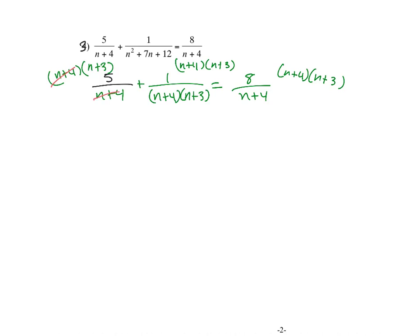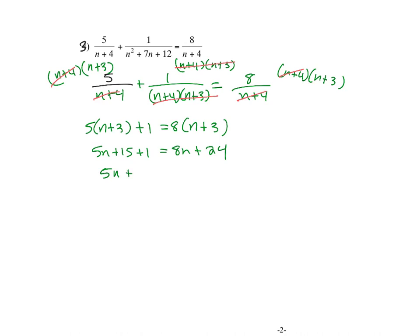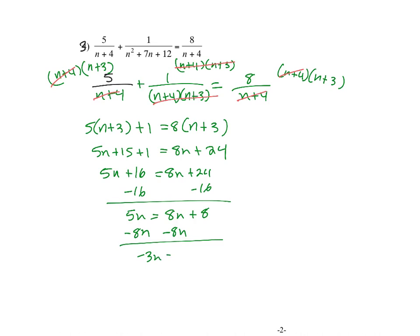I cancel the (n plus 4), cancel both of them, and cancel the (n plus 4). So I have 5 times (n plus 3) plus 1 equals 8 times (n plus 3). So 5n plus 15 plus 1 equals 8n plus 24. That gives 5n plus 16 equals 8n plus 24. Subtracting 16 and 8n: so 3n equals 8, divide by 3. n equals negative 8 over 3. And that's it.